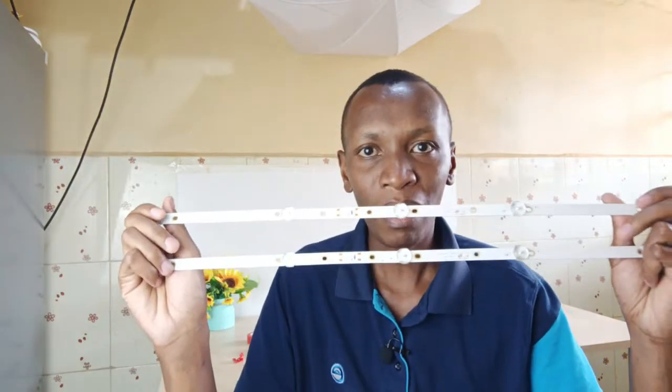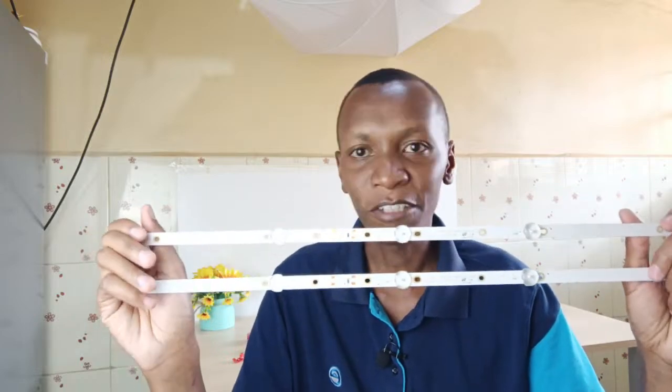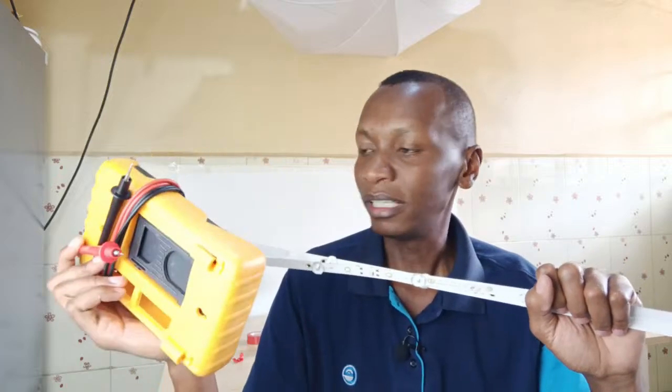The backlight in question that I'm talking about are these backlights. These are from a Vitron smart television and you can't use a multimeter like I will show you in a few minutes.